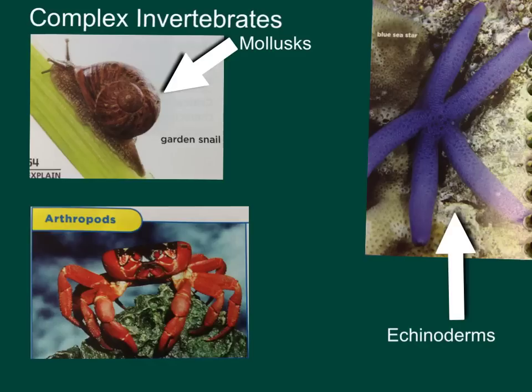Again, your more complex invertebrates include mollusks, echinoderms, and arthropods. Mollusks have bilateral symmetry. Echinoderms have radial symmetry. Arthropods have bilateral symmetry. So those are all the invertebrates. Now let's discuss the vertebrate groups.